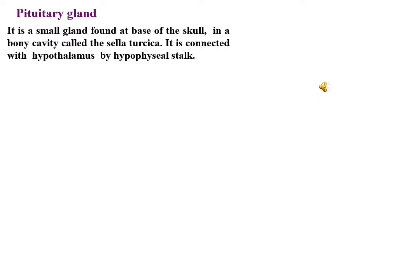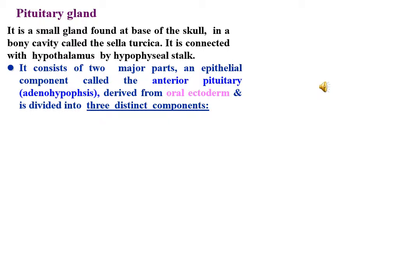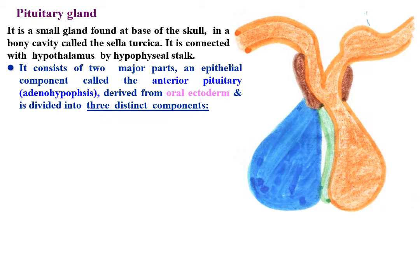The pituitary gland is a small gland found at the base of the skull in a bony cavity called the sella turcica. It is connected with the hypothalamus by the hypophysial stalk. It consists of two major parts: an epithelial component called the anterior pituitary or adenohypophysis, derived from the oral ectoderm, divided into three parts.